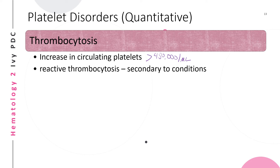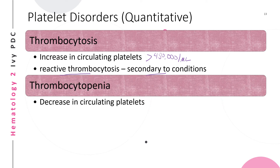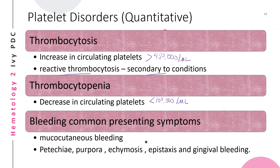Reactive thrombocytosis is an elevation in platelet count that is secondary to conditions like inflammation, trauma, or other underlying conditions. Thrombocytopenia is a decrease in platelet count to fewer than 100,000 per microliter, and it is the most common cause of clinically important bleeding.